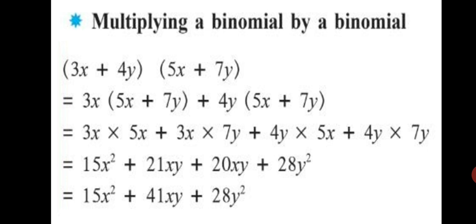Next, 3x into 7y: 3 sevens are 21, and x into y is xy, giving plus 21xy. Then 4y into 5x: 4 fives are 20, and y into x is xy, so plus 20xy. And 4y into 7y: 4 into 7 is 28, and y into y is y squared, giving plus 28y squared.